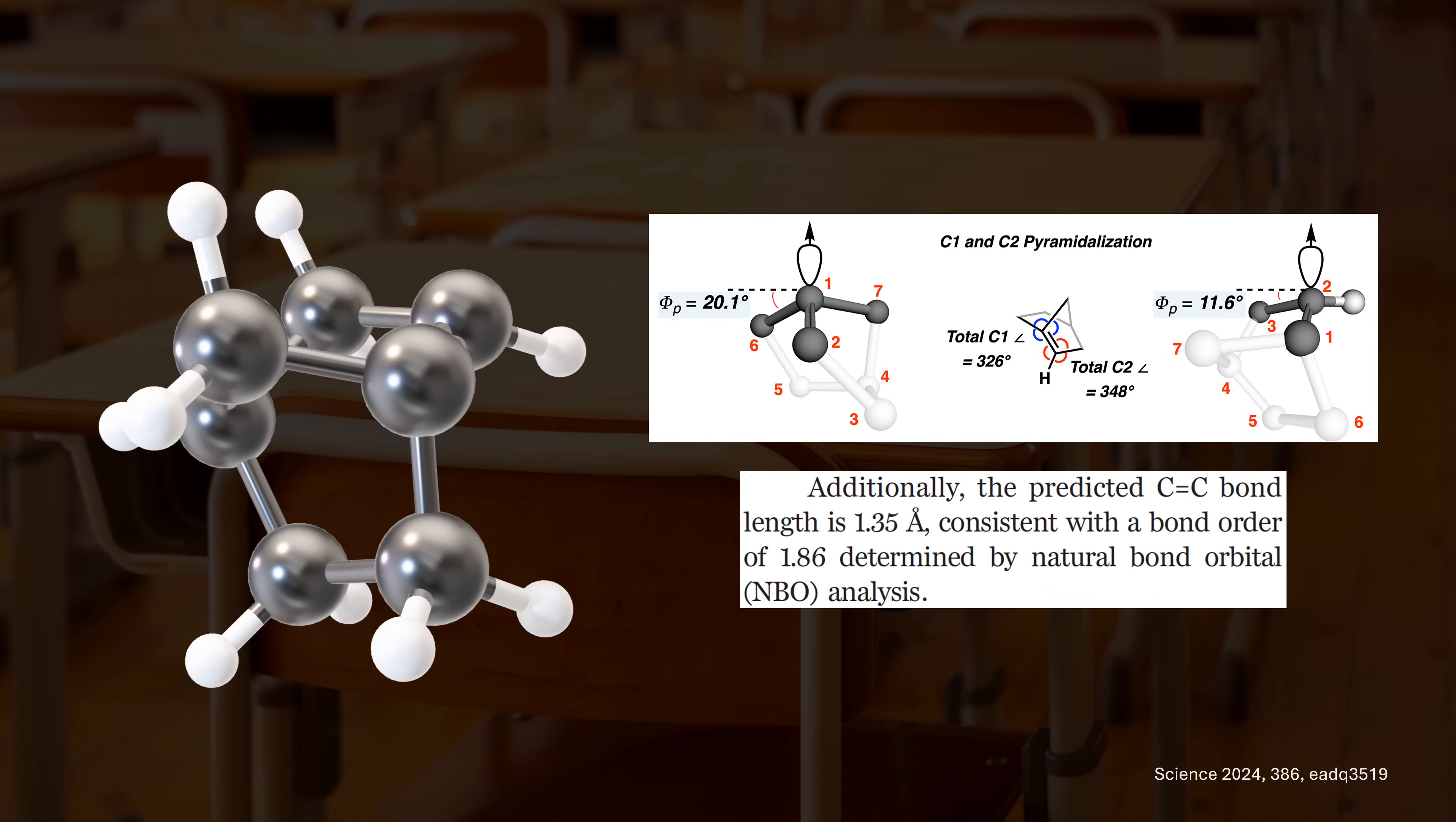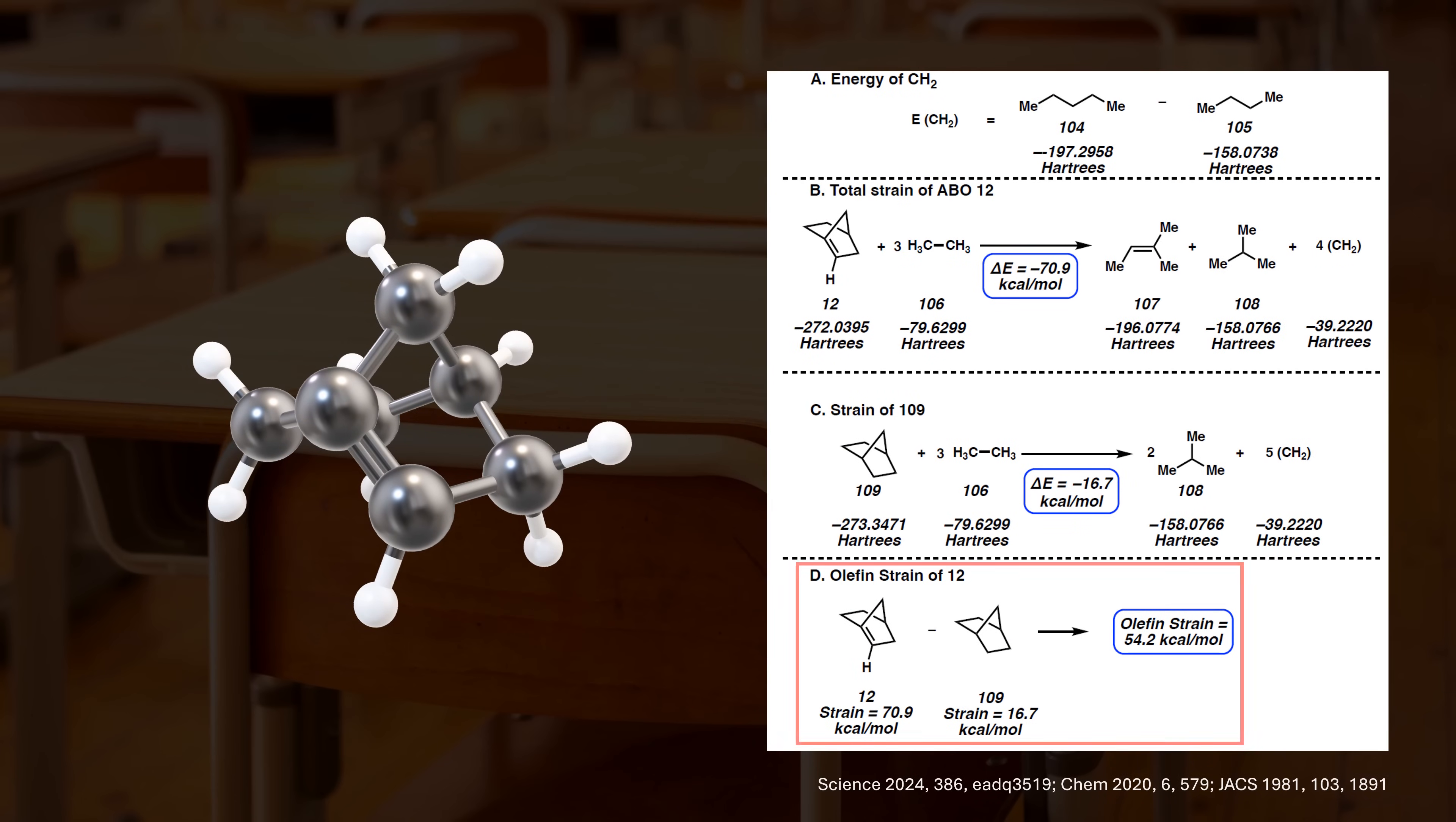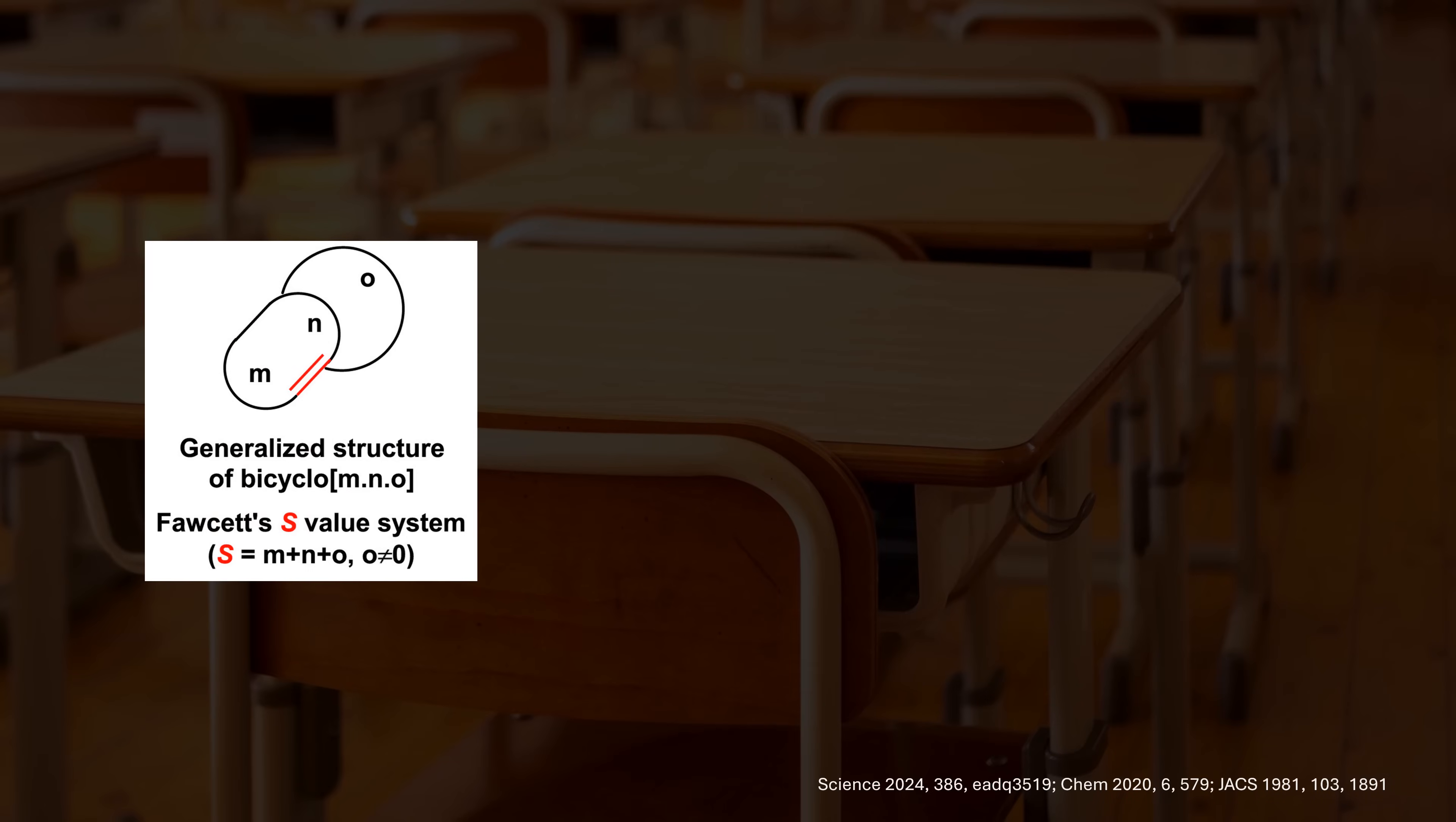We have seen why this system is destabilized and strained, but how strained is it? You might know that some thermodynamics shenanigans called homodesmotic equations can help out. Essentially, we are comparing the total strain energies of the saturated and unsaturated molecules to evaluate the pure strain contribution of the anti-Bredt double bond. Such computations were established in the 1980s as physical organic chemists tried to understand the limits of these olefins based on their size and strain energy.